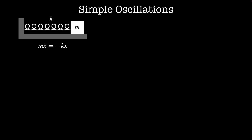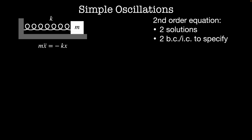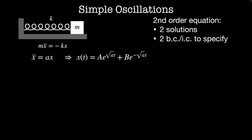For simple oscillators, the force is proportionate to the distance that a mass has moved away from its equilibrium position. This gives the standard equation for the force: F = -kx. This is a second-order equation, and the most general solution to a second-order equation involves two solutions, which means we need at least two boundary conditions or initial conditions to specify the trajectory completely. It has general solutions e to the +√a·t and e to the -√a·t, and I'll give each of them arbitrary constants a and b to weight them for now.